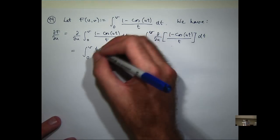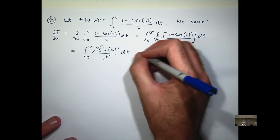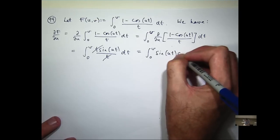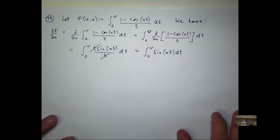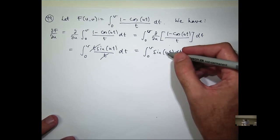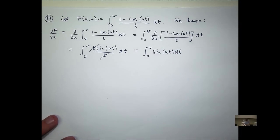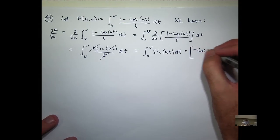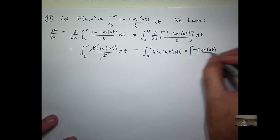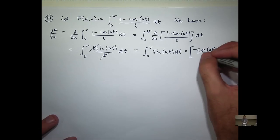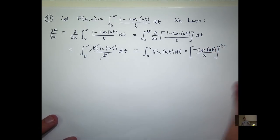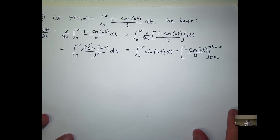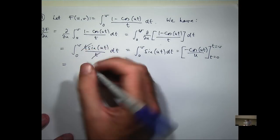Now I can cancel off those T's. And then all I really need to do is integrate. So I can integrate sine(ut) with respect to T. I'm imagining that u is a constant. So imagine u is a constant, integrate with respect to T, and I'll get something like this. And so if I plug in my T equals V and T equals zero, I should get something like this.